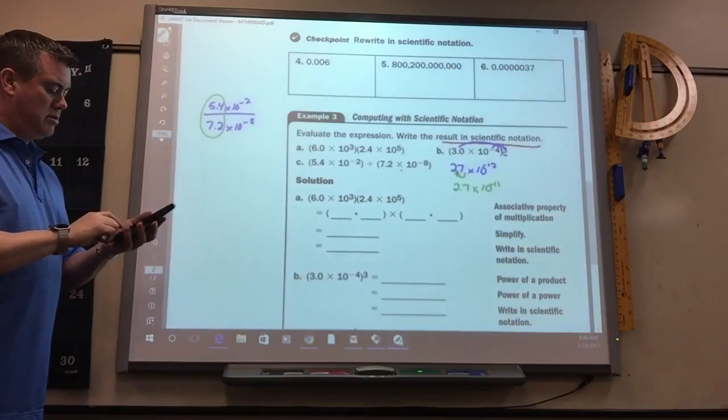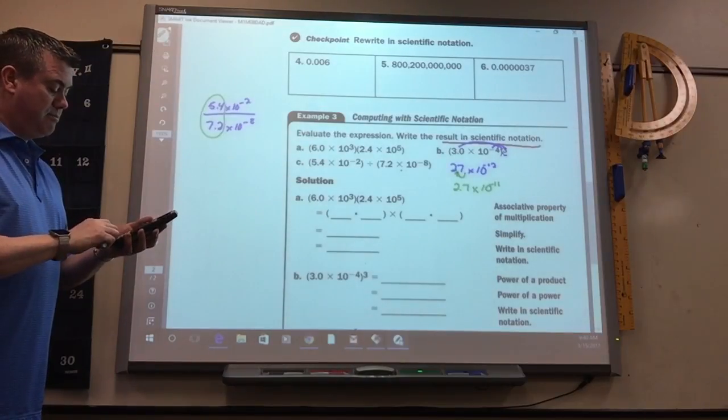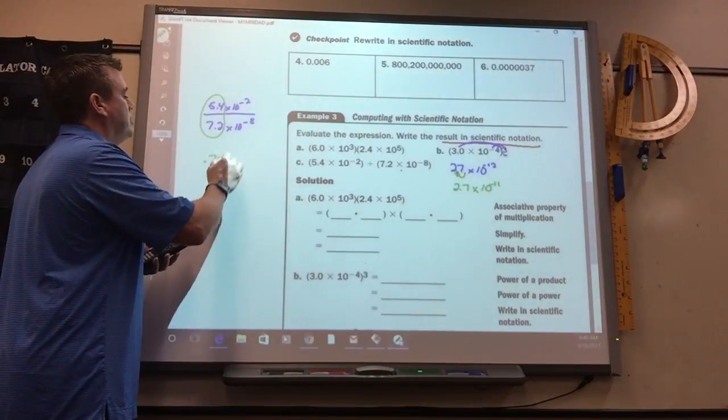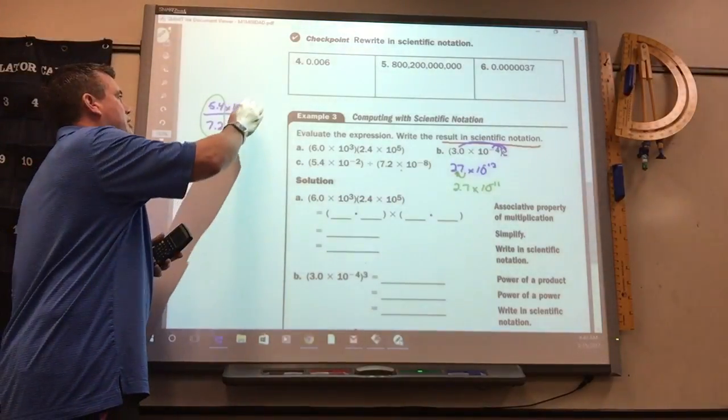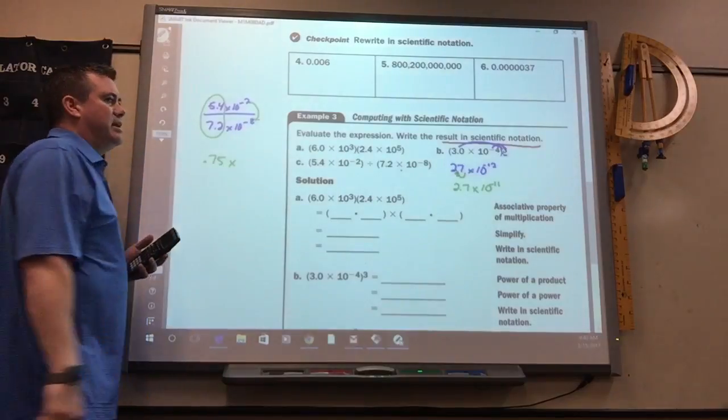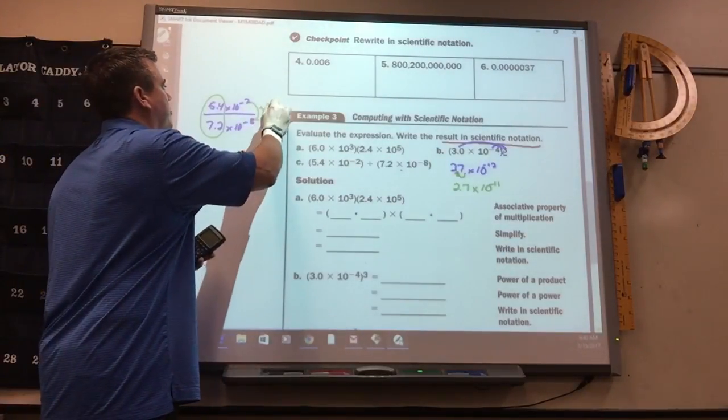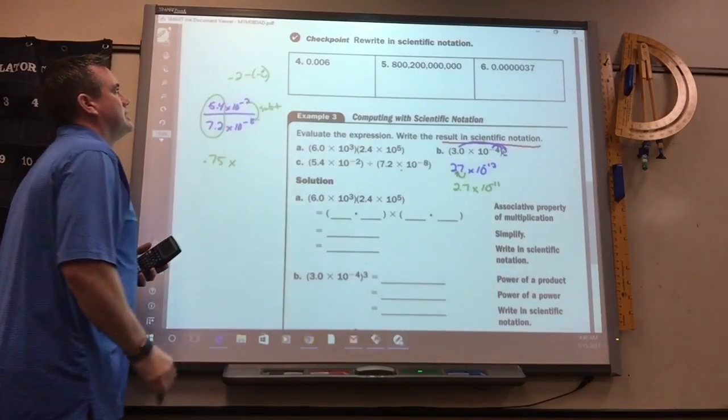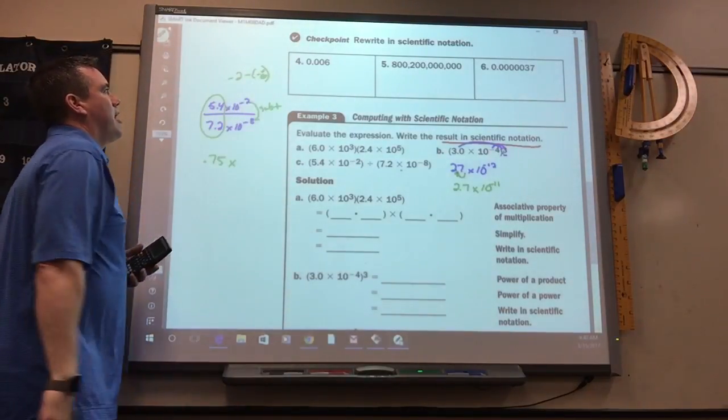So, 5.4 divided by 7.2 is 0.75 times 10. Now, do you remember what you do to these when it's divide? Subtract. So, negative 2, take away negative 8 is 6.